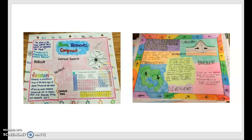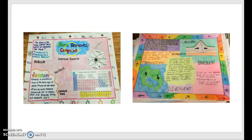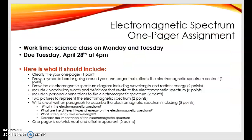Let's talk about what your work needs to include in order to get a good grade on this assignment. The first thing is just a title. You can see in the examples they have titles in different places. It doesn't matter where you put the title, but it needs to include a title. The second thing is you need to draw a symbolic border going around your one pager that relates to the electromagnetic spectrum.